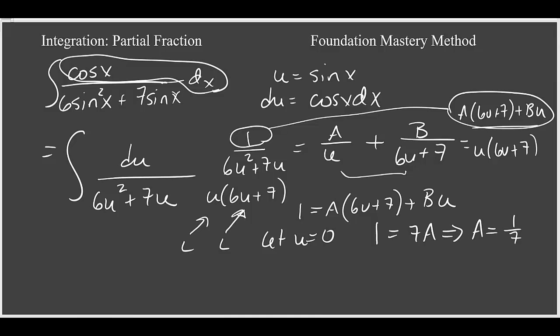To find b, let's equate the coefficient of u on the left with the coefficient of u on the right. The coefficient of u on the left-hand side of the equation is just 0. The coefficient of u on the right-hand side is going to be 6a plus b. And since we know that a is 1-seventh, that tells us that b has to equal negative 6-sevenths.